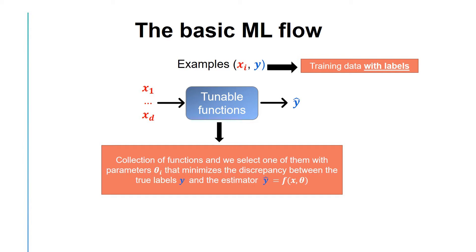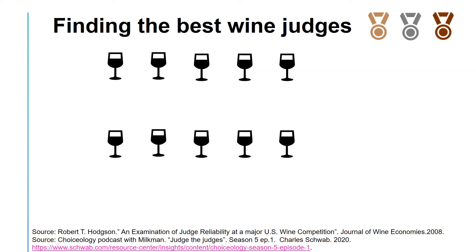We need to understand the complexity of these functions and guarantee low generalization error. Let's consider the following story regarding evaluating wine judges, which was featured in an episode of one of my favorite podcasts, Choiceology. I provide a short summary of the story. For more details and interesting facts, you can see the corresponding paper and the podcast given below.